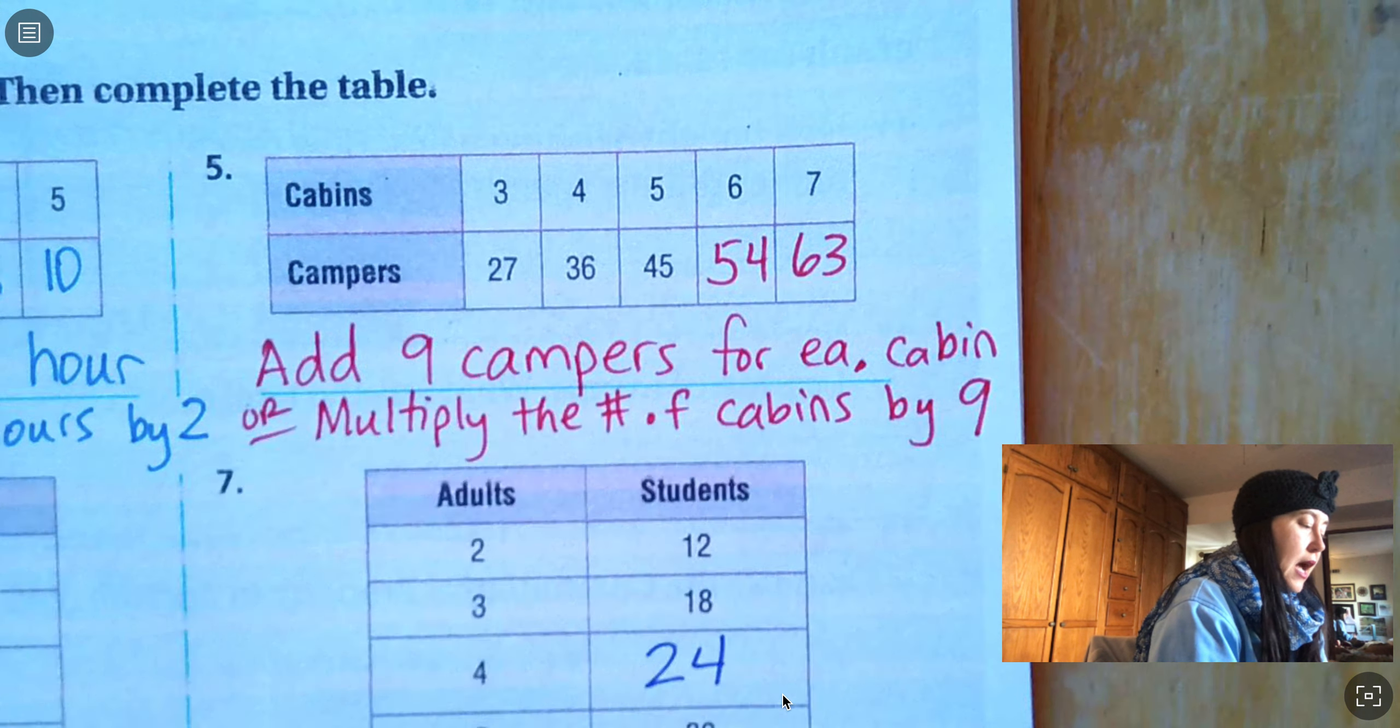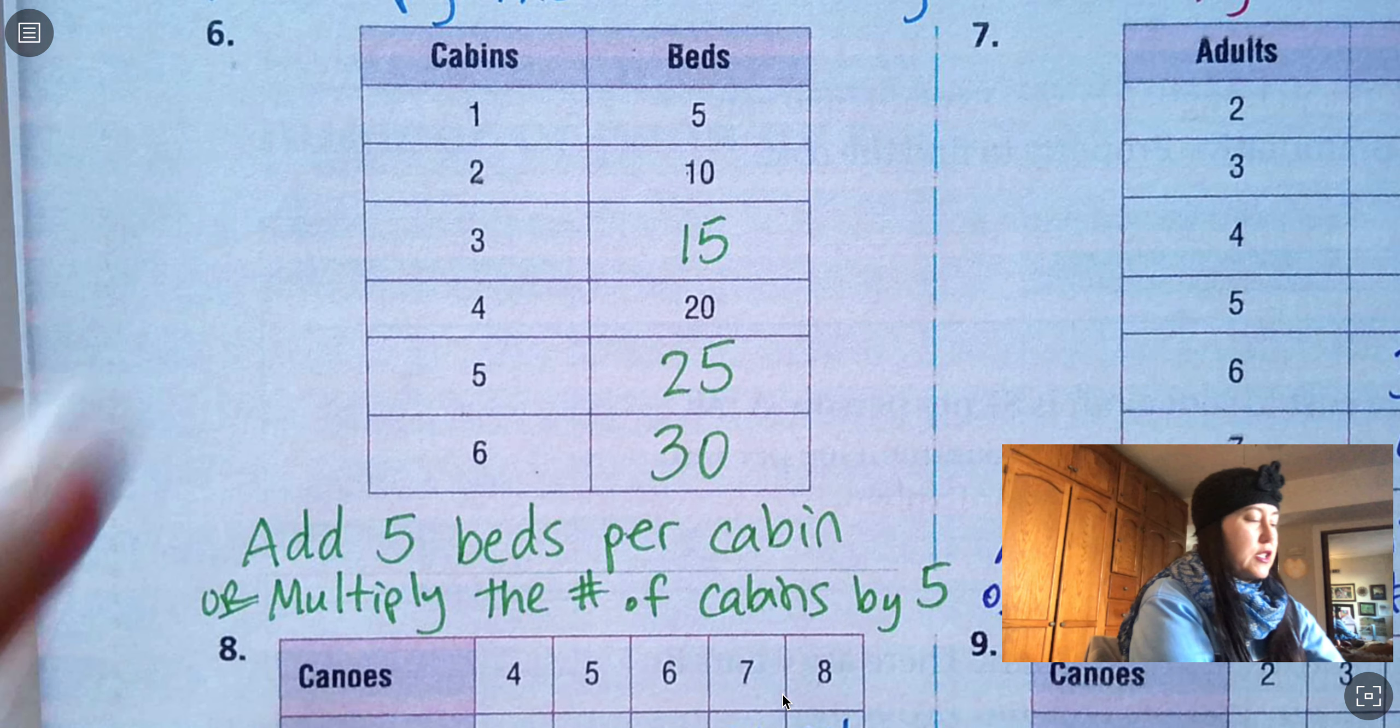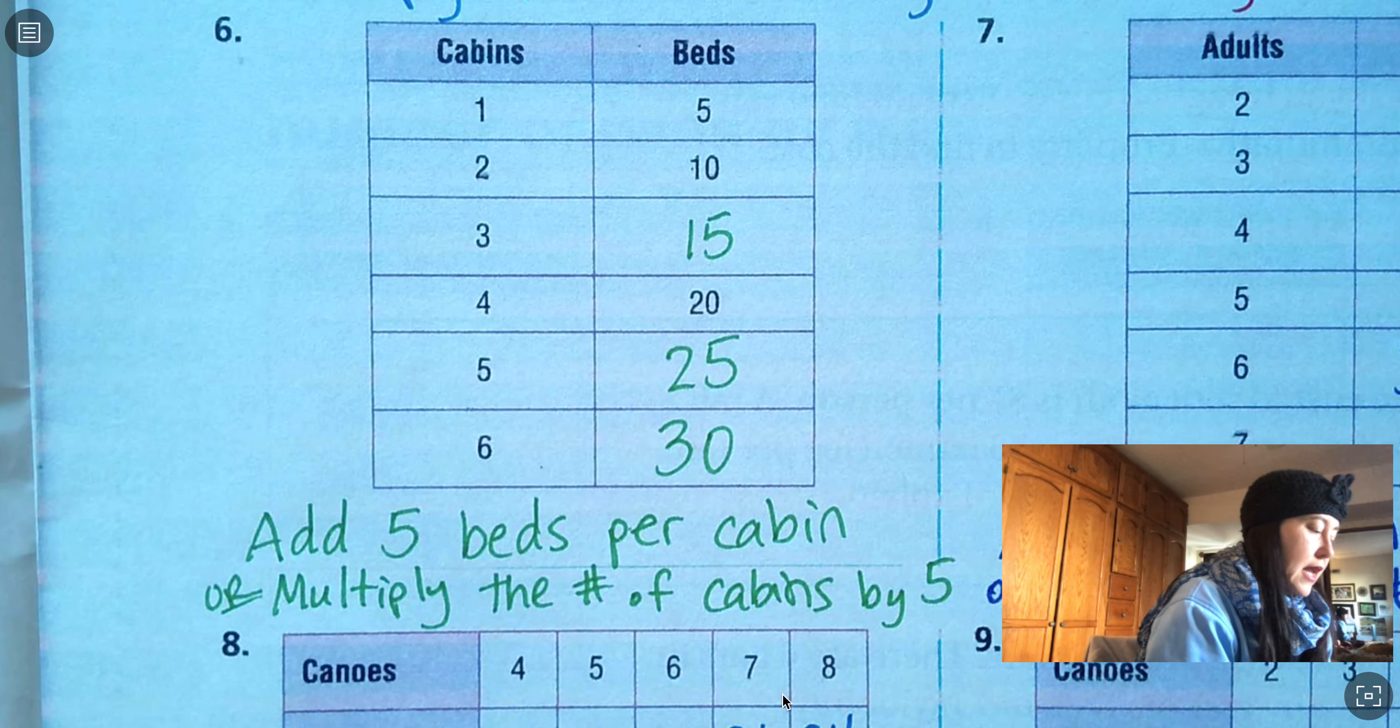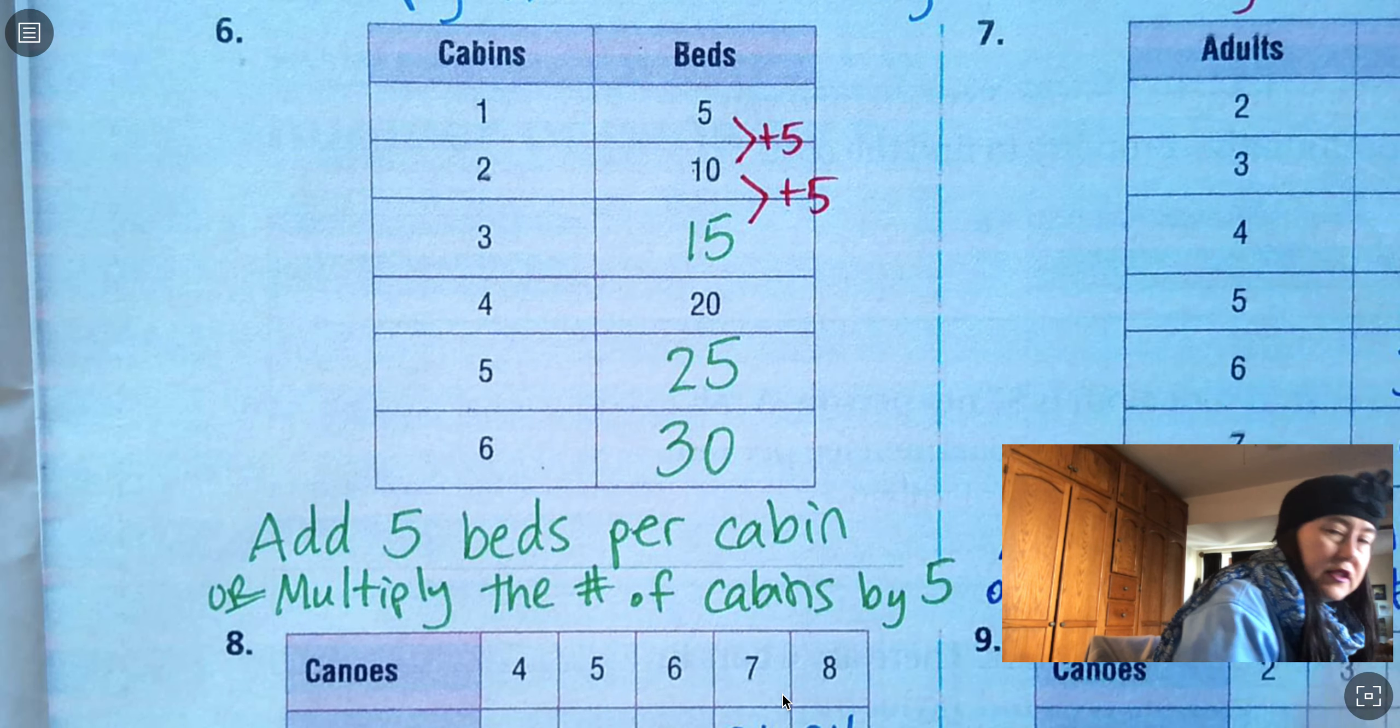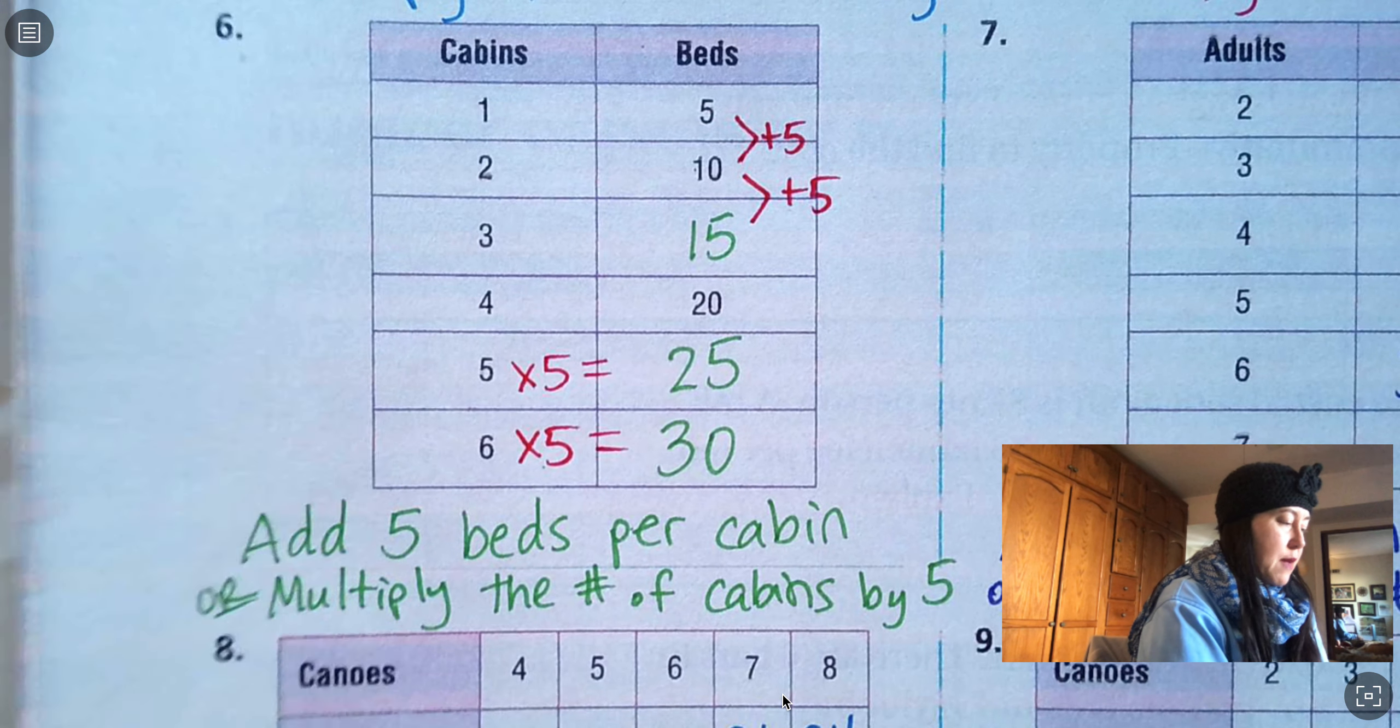For number six, let's take a look. We've got cabins and beds. And they've changed the direction of the table. Now it's not going horizontal, it's a vertical table. But it works the same way. So we have one cabin gives you five beds. So you can add five beds per cabin. Each time you add a cabin, you're adding five beds. You can multiply the number of cabins by five. So five times five equals 25, six times five equals 30. You can think of this table two different ways.